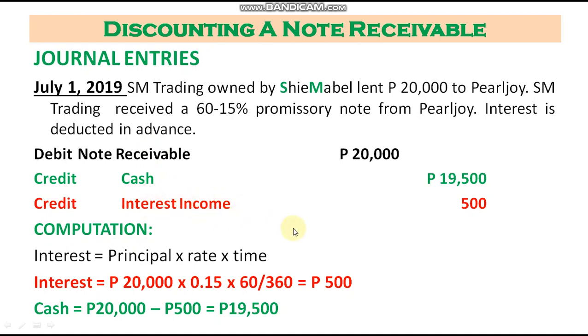The notes receivable represents the face of the note, the cash represents what was given out, and the interest income is what was earned upfront.